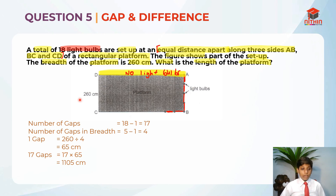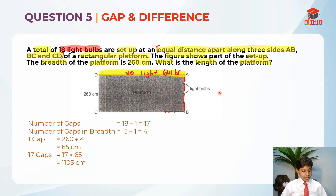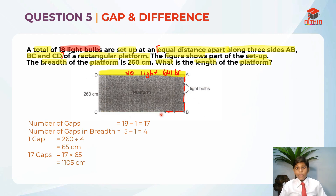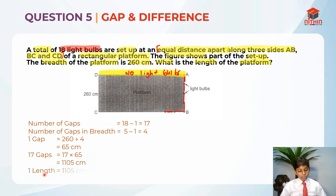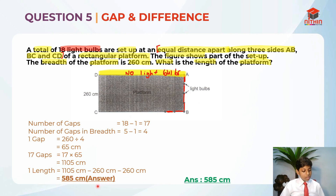It is now easy to find the length. We know the breadth is 260 cm, and among the three sides there are two breadths and one length. So we take the total of the three sides, 1,105 cm, minus 260 minus 260, which gives us 585 cm. That is the answer for question 5.